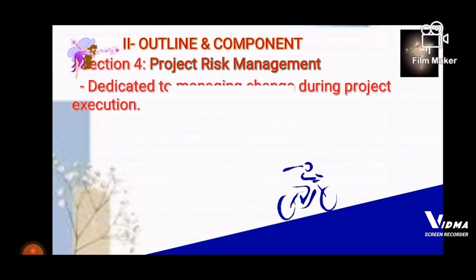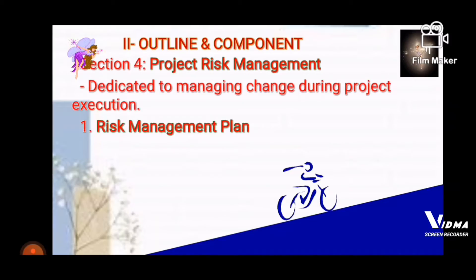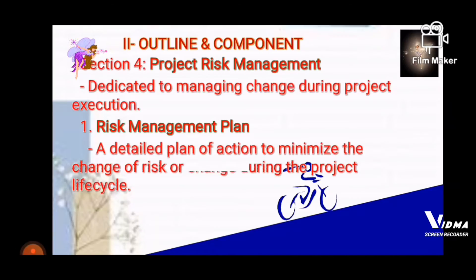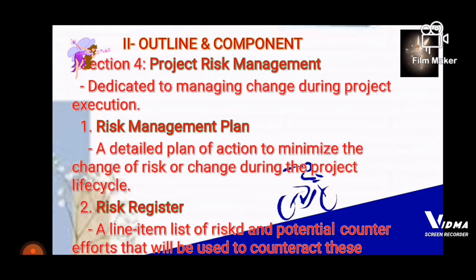Section four covers Project Risk Management, dedicated to managing change during project execution. The Risk Management Plan is a detailed plan of action to minimize the chance of risk or change during the project life cycle. The Risk Register is a line-item list of risks and potential counter-efforts that will be used to counteract them.